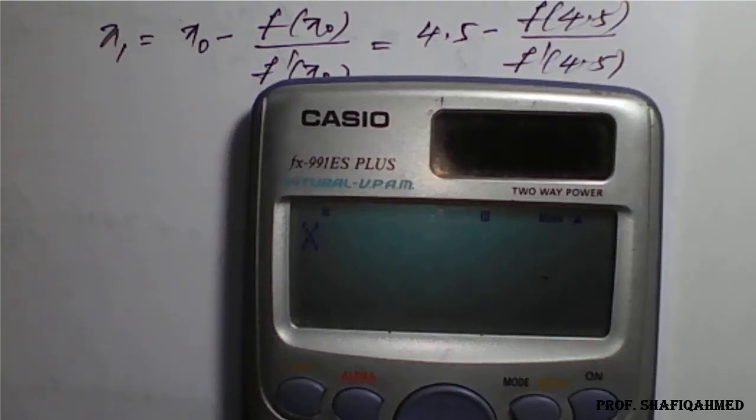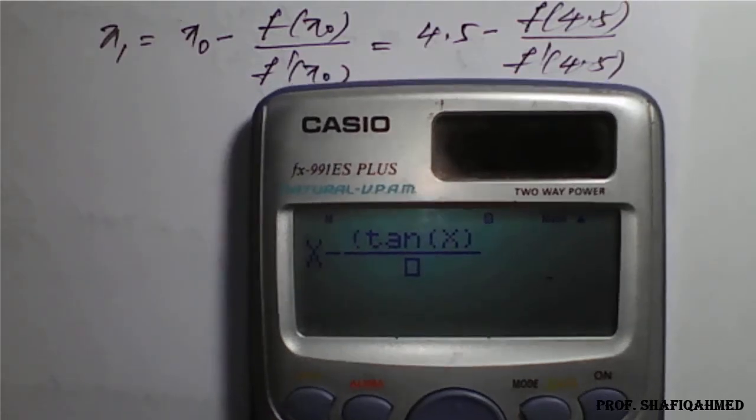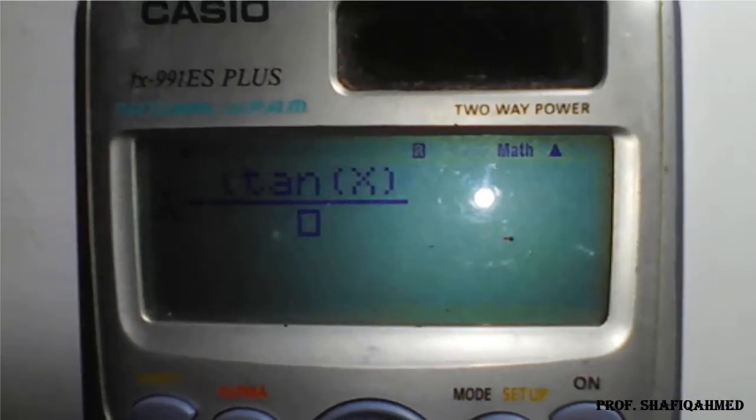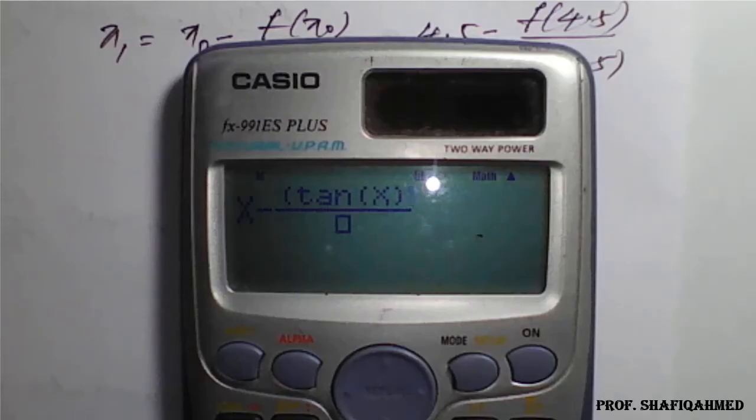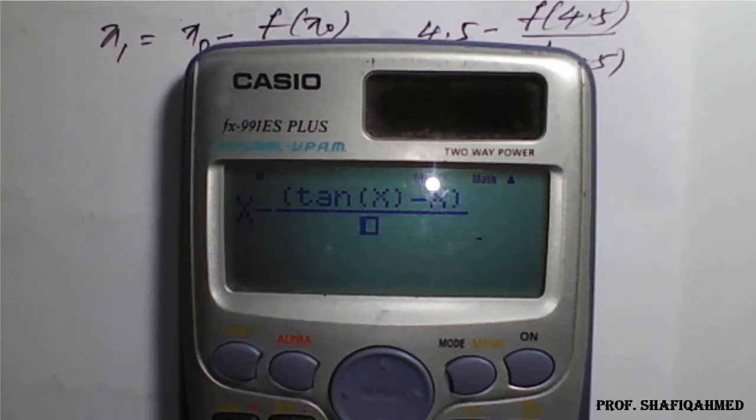Therefore, 4.5 minus in the numerator, our f of x is tan x minus x, so tan of 4.5 minus 4.5, close the bracket. Your calculator mode should be in radians because these are trigonometric functions.